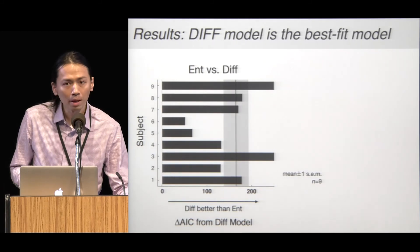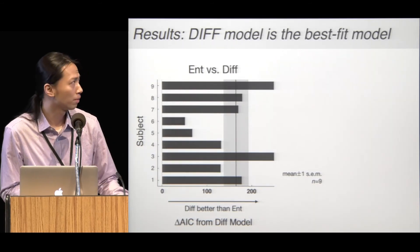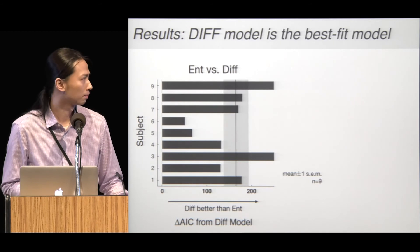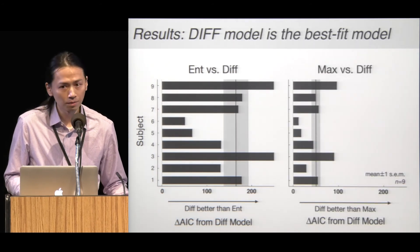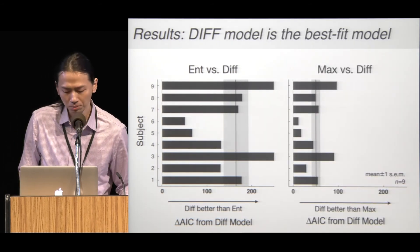When comparing the AIC score, we found that the difference model outperformed the entropy model, and the difference model outperformed the Max model.